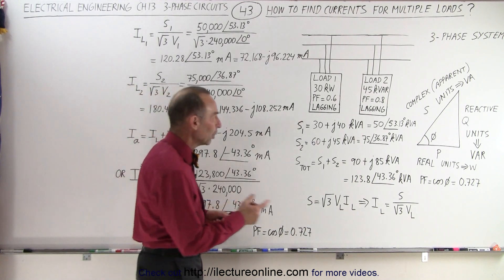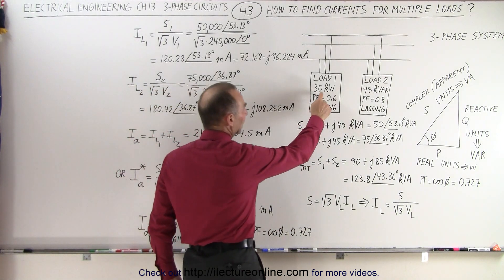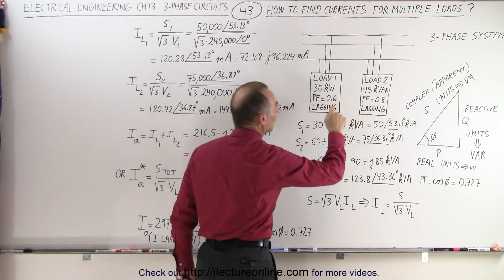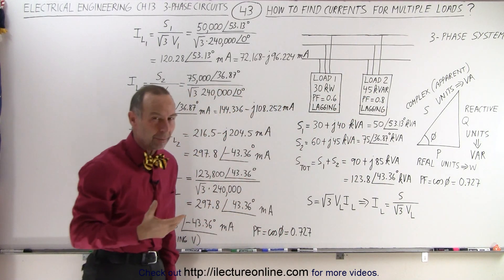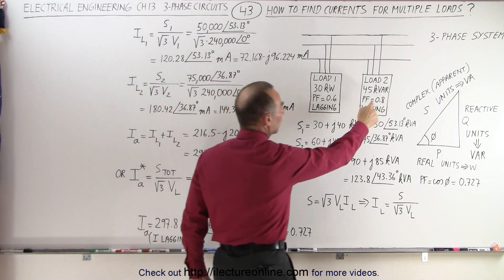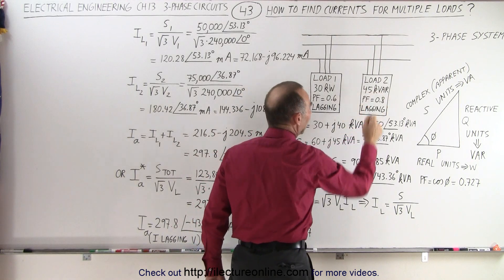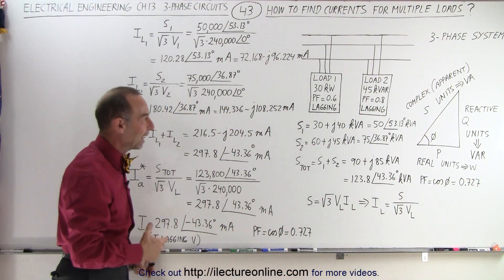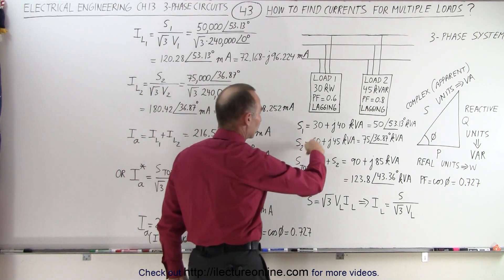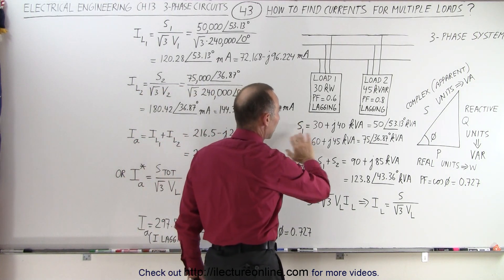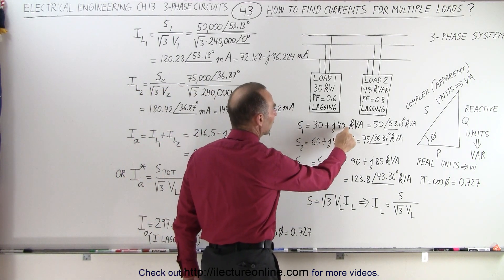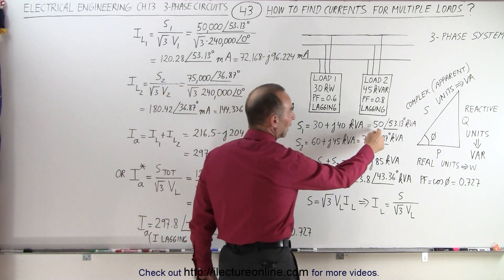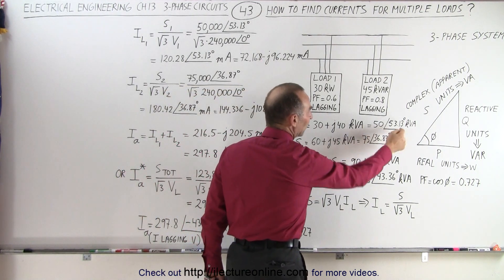We're going to use the same loads. Notice that we have a 30 kilowatt load and a 45 kVAR load. When we talk about kilowatts, we're talking about the real power, and when we talk about kVAR, we're talking about the reactive power. When we write down their actual complex power equations, we have the real part and the reactive part, and we can also put it in magnitude and phase angle format.